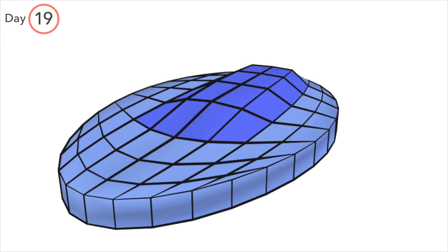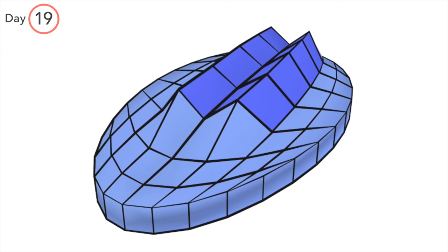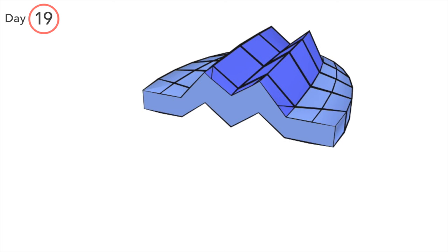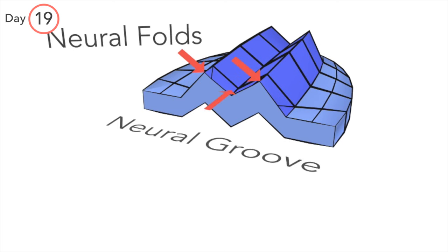On day 19, the neural plate begins to buckle in the midline. We call this dip the neural groove, and the mounds either side, the neural folds.